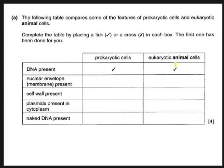There is DNA in both prokaryotic and eukaryotic cells. Nuclear envelope membrane present: prokaryotic cells have no membrane-bound organelles, so it's a tick for eukaryotic and a cross for prokaryotic - the DNA in prokaryotic cells is just in a loop floating around in the cytoplasm. Cell wall present: there is no cell wall in an animal cell. Plasmids present: only in prokaryotes - eukaryotic animal cells don't have plasmids. Naked DNA: in prokaryotic cells the DNA is a loop in the cytoplasm, whereas in animal cells the DNA is inside the nucleus wrapped around histone protein structures.